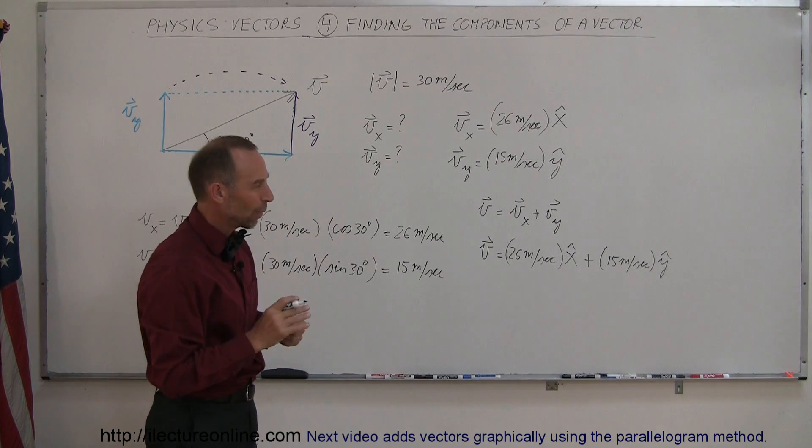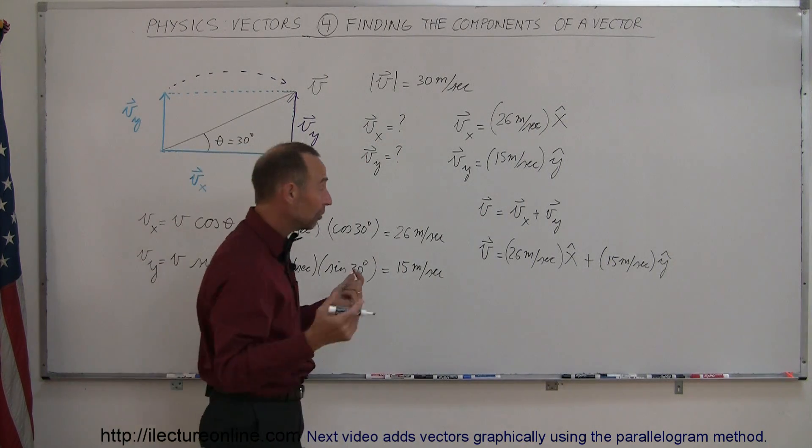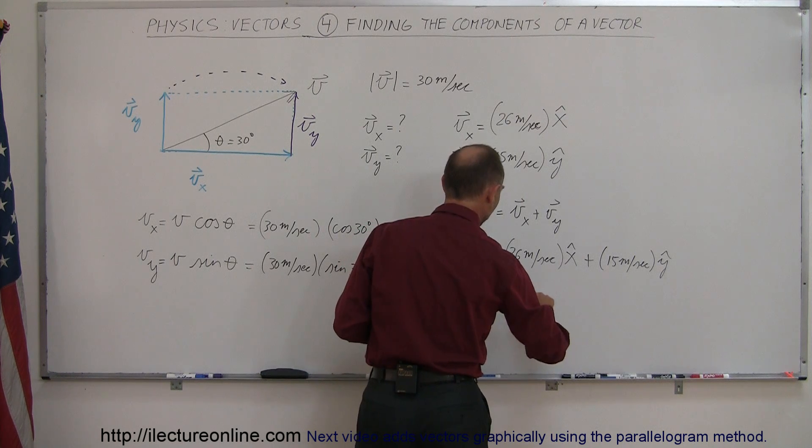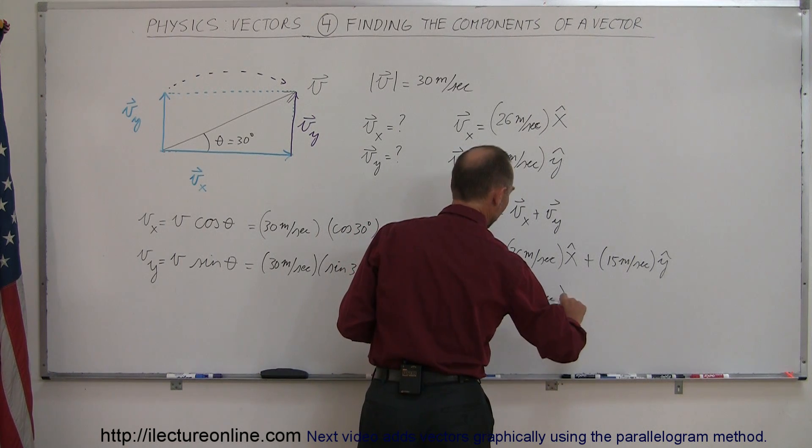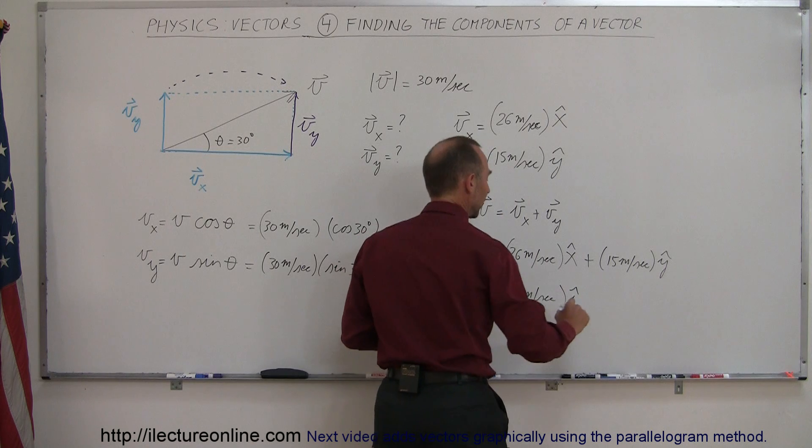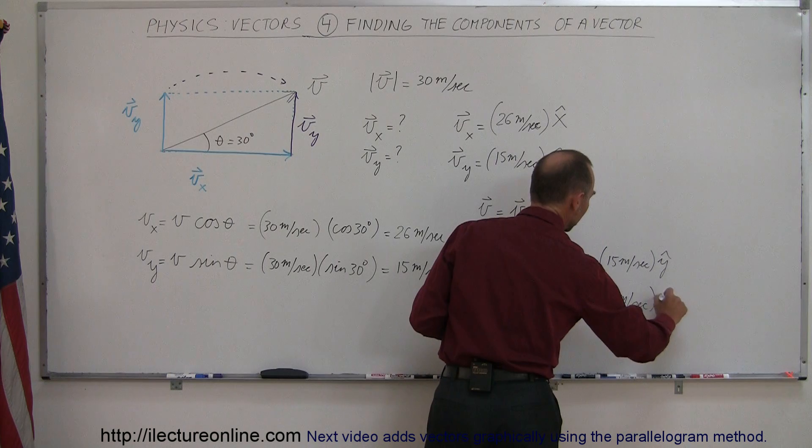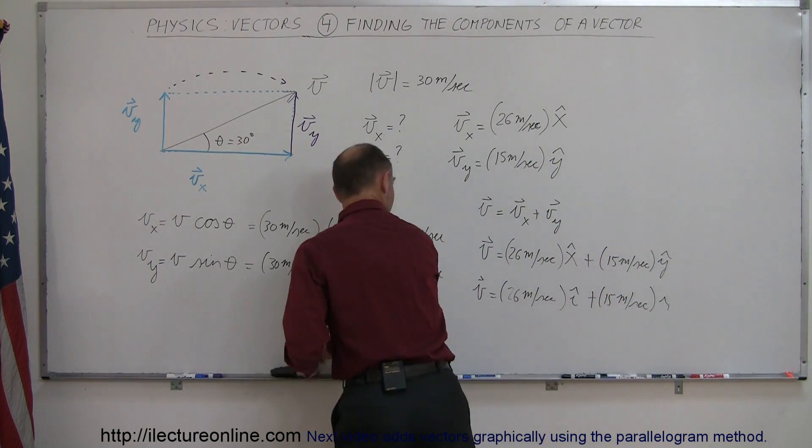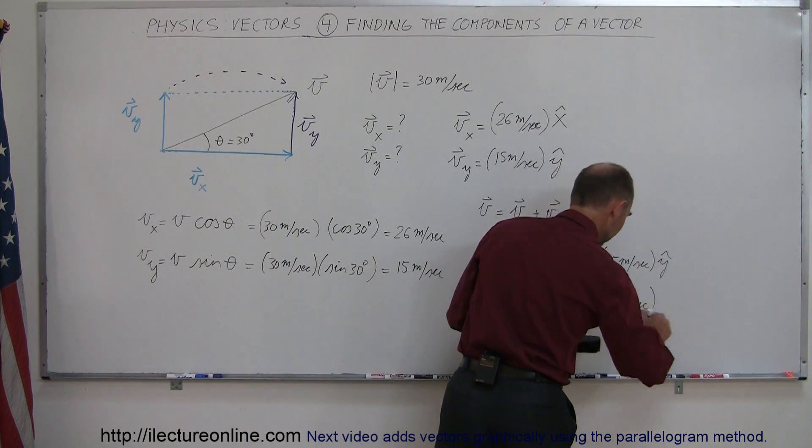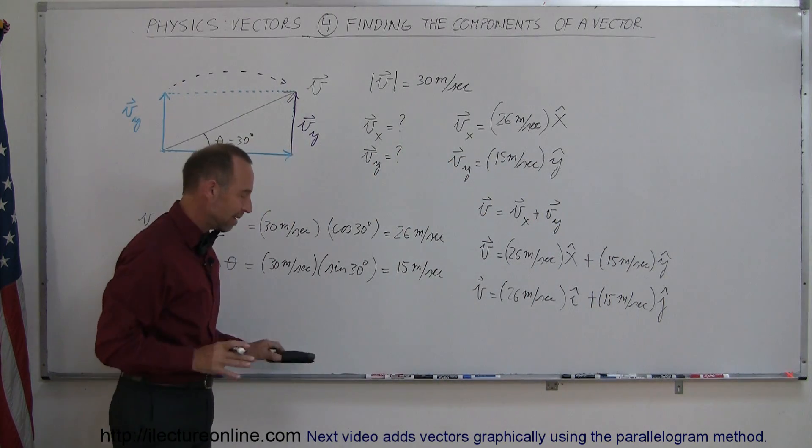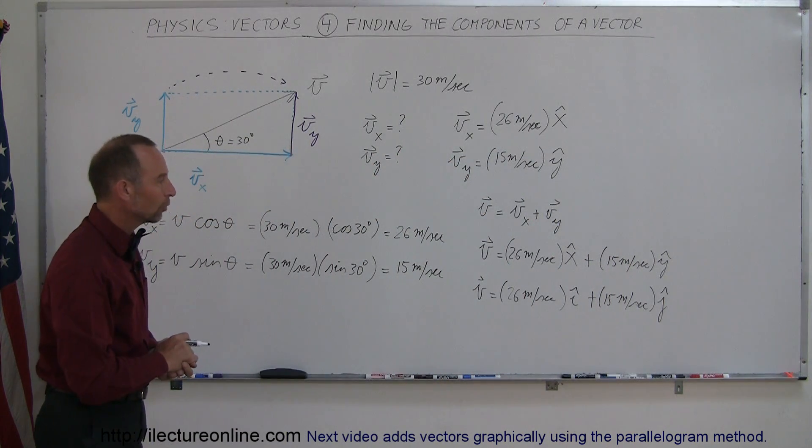Now some people don't like x and y hats, they like i, j and k. So you could write this as v is equal to 26 meters per second in the x direction, I'll write as an i plus 15 meters per second in the j direction. So either way, it's exactly the same thing. So you can see that both notations work.